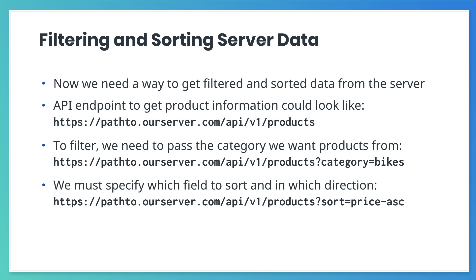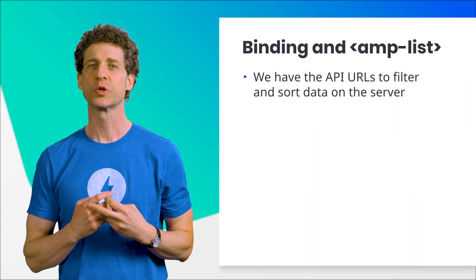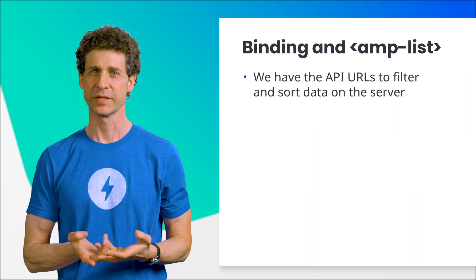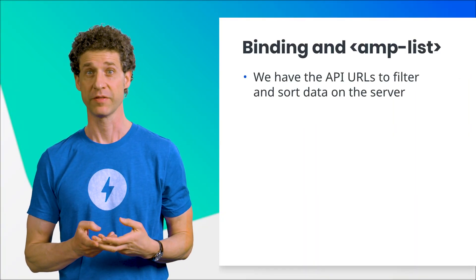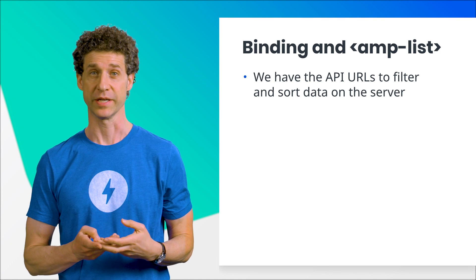For example, to sort by the price in ascending order, we might use a URL like this. To use more than one parameter, separate them with an ampersand. Now we know how to use query parameters to get from the server the data that the user wants to see.